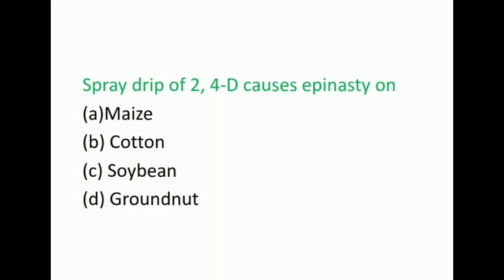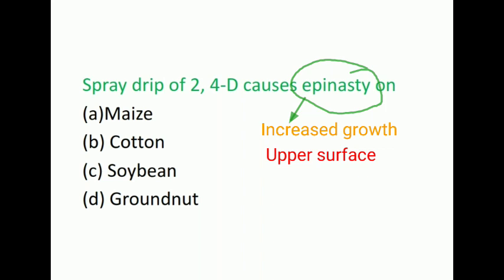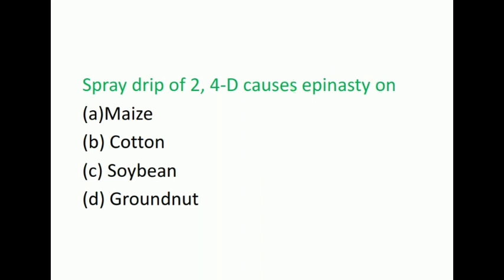Next question: Spray drift of 2,4-D causes epinasty on? Options are maize, cotton, soybean, groundnut. Correct answer is cotton. So epinasty means increased growth on the upper surface of a plant organ or part causing it to bend downwards.